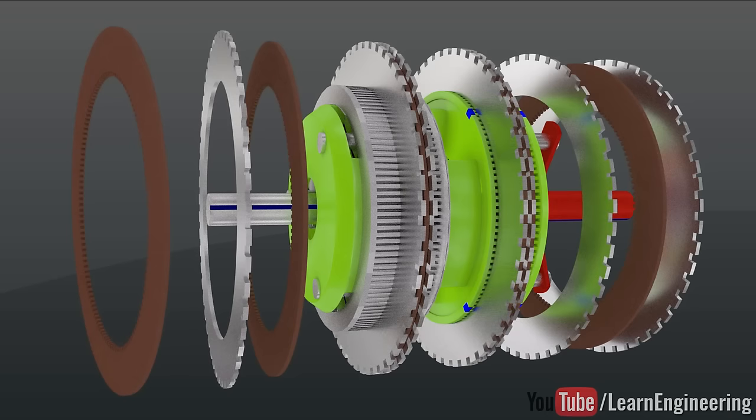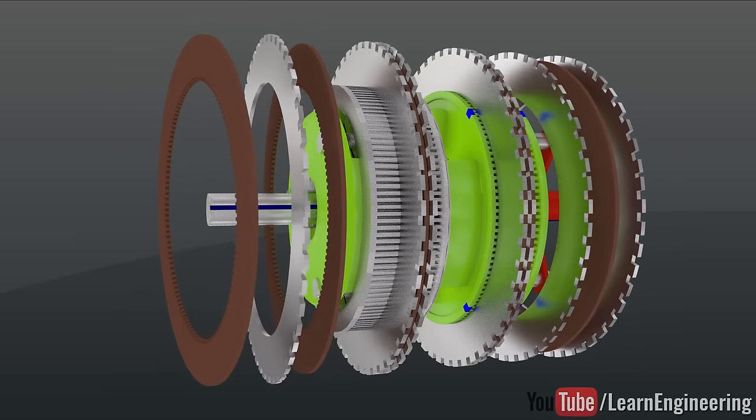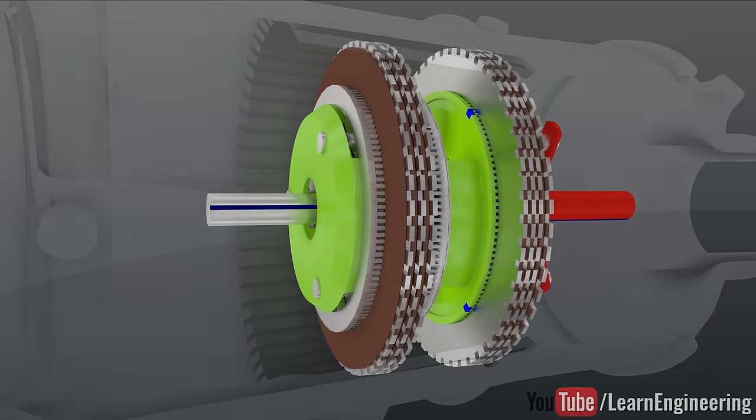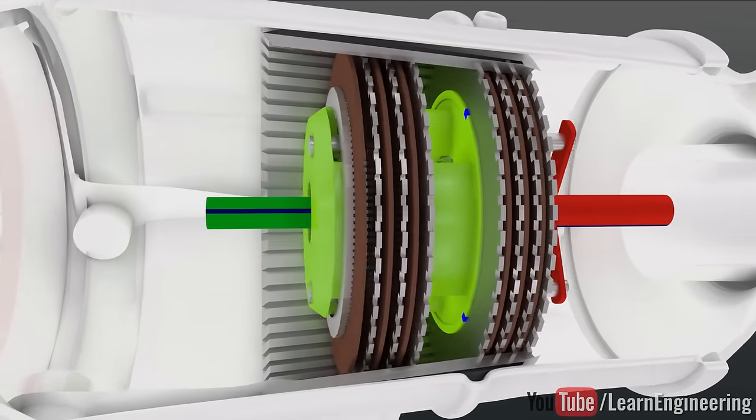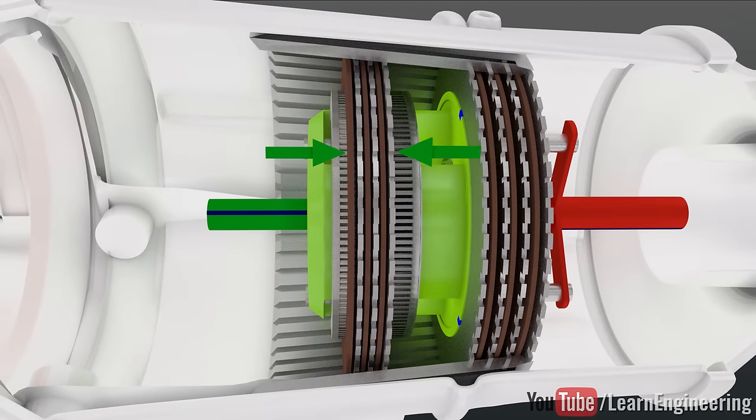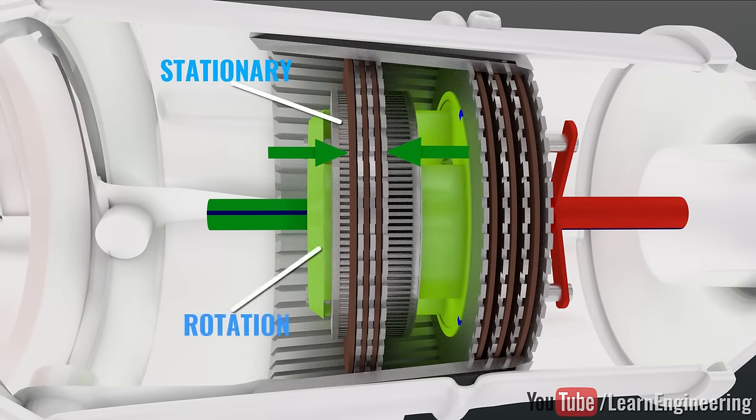Two clutch packs are introduced to arrest the motion of the ring gears. When the clutch pack is pressed, the corresponding ring gear will be stationary and carrier will rotate.